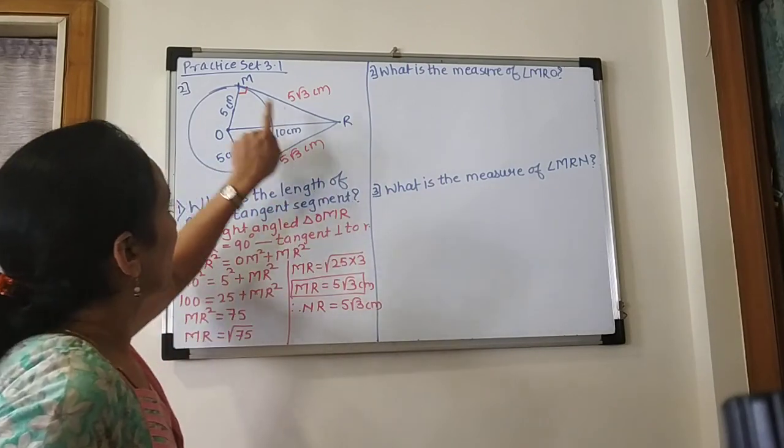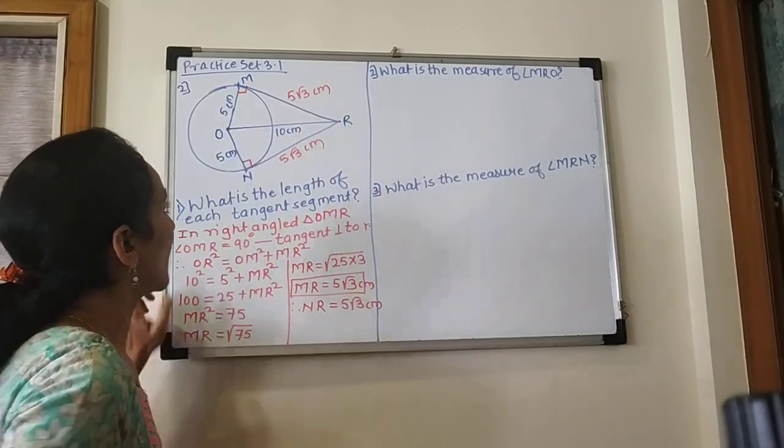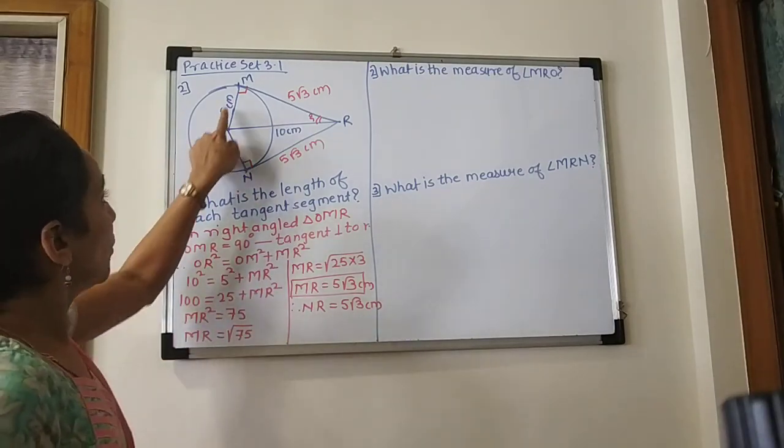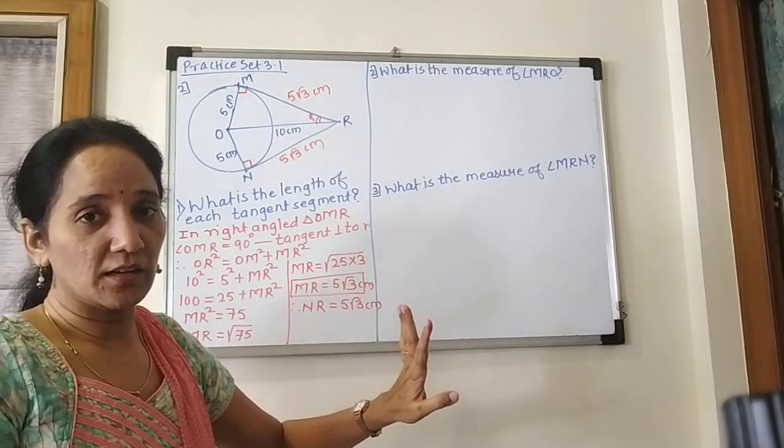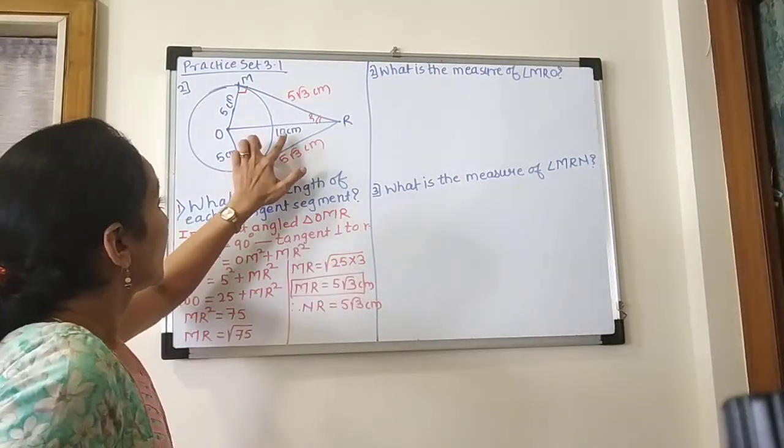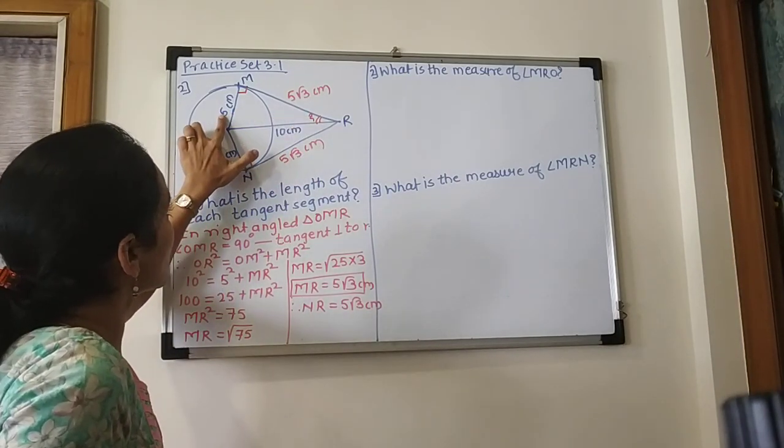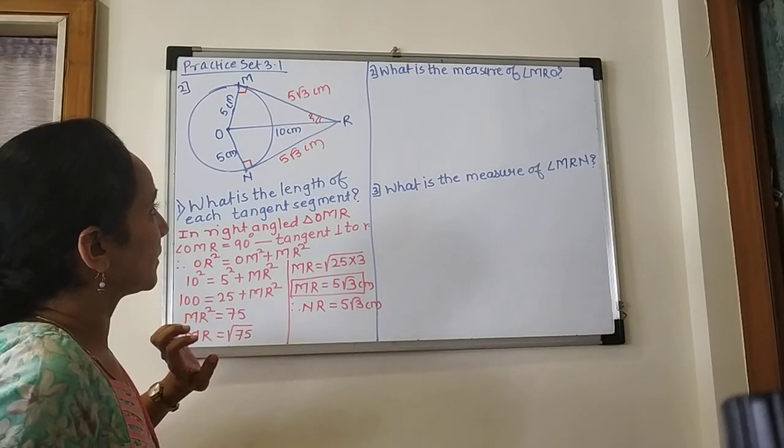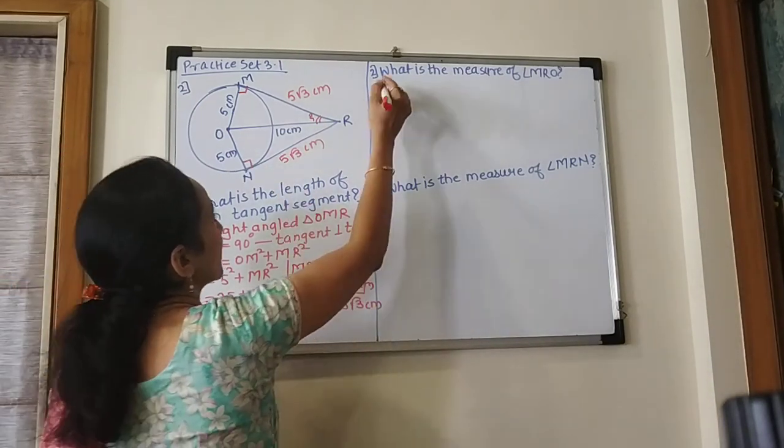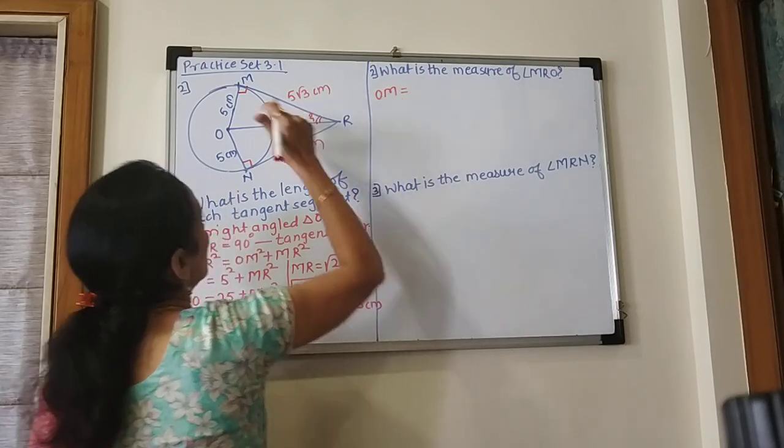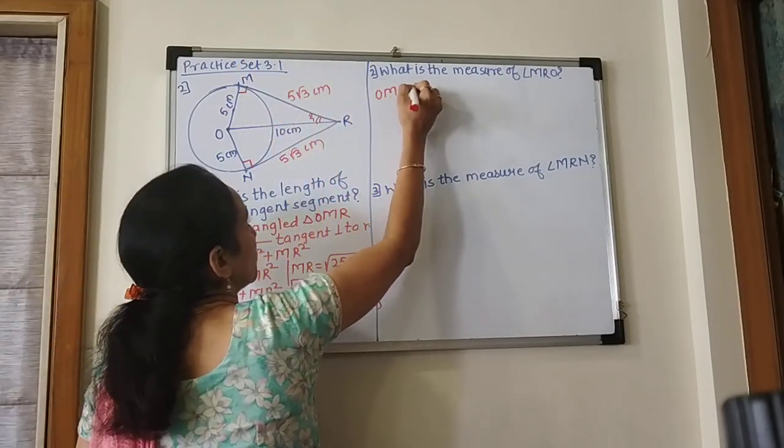Next question we have to solve: what is the measure of angle MRO? This angle's measurement. Now OMR, this right angle triangle, has hypotenuse 10 and this side OM is 5 cm. I will tell you that OM is equal to 5 cm and OR is equal to 10 cm.